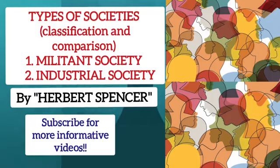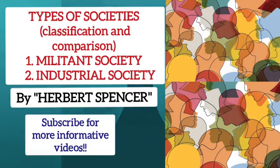Spencer also classified societies into military society and industrial society on the basis of the relative preponderance of one or the other of the regulating, sustaining, and distributive systems. He constructed two extremely dissimilar types to classify societies: militant societies and industrial societies. The first was a type in which the regulating system was dominant over all other aspects of society.